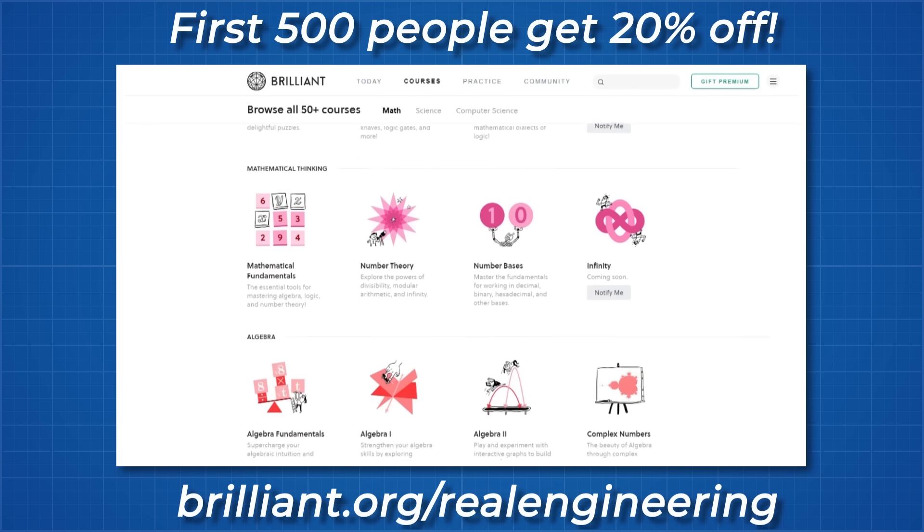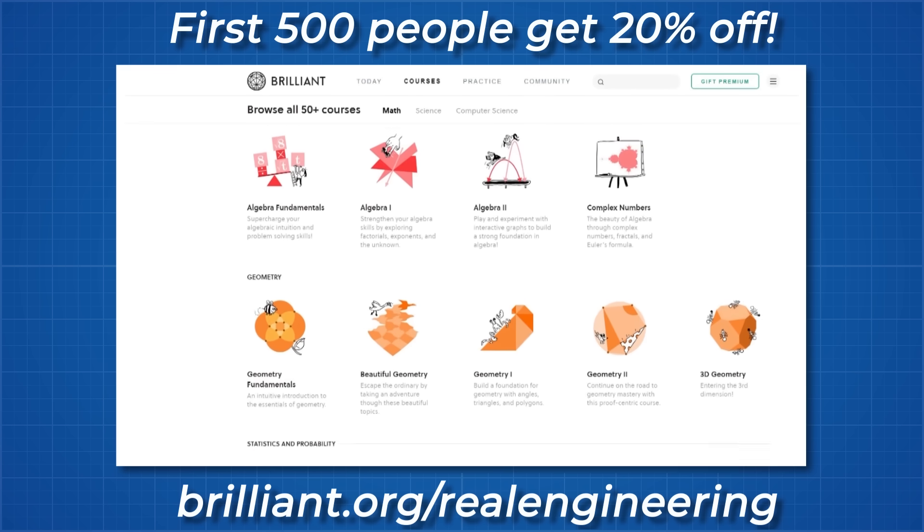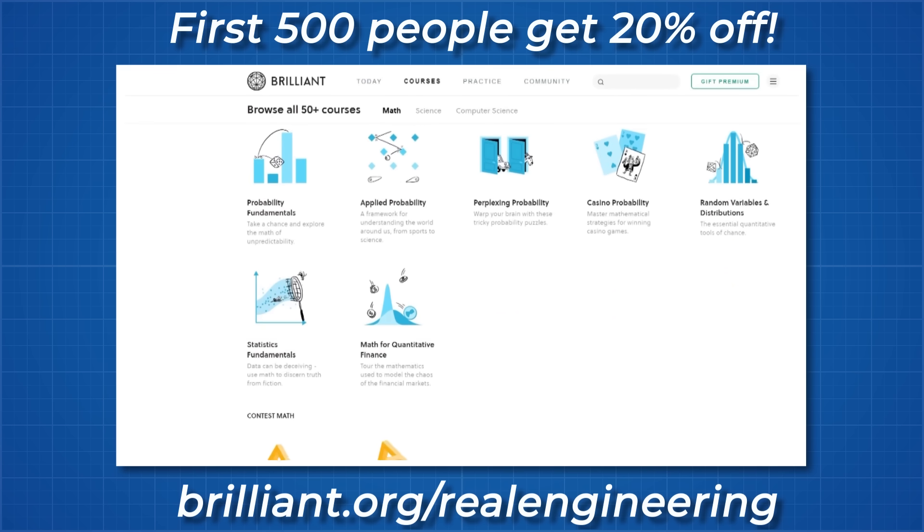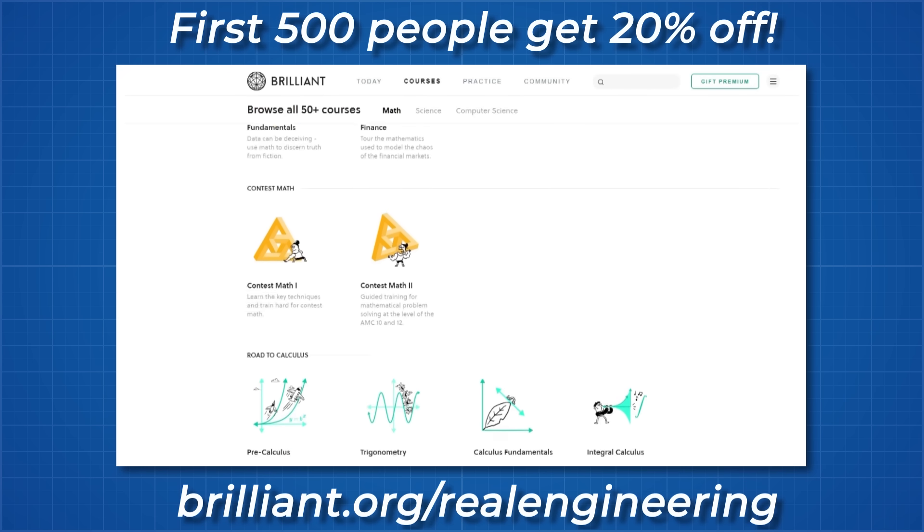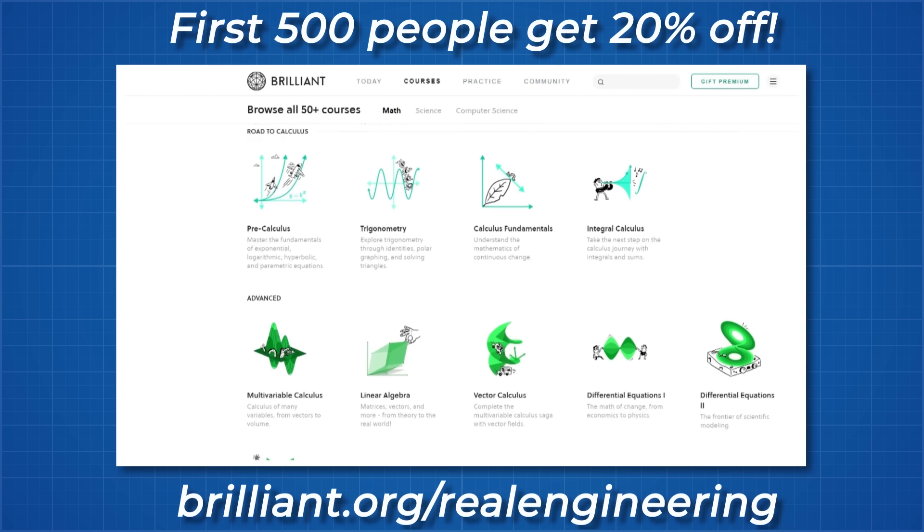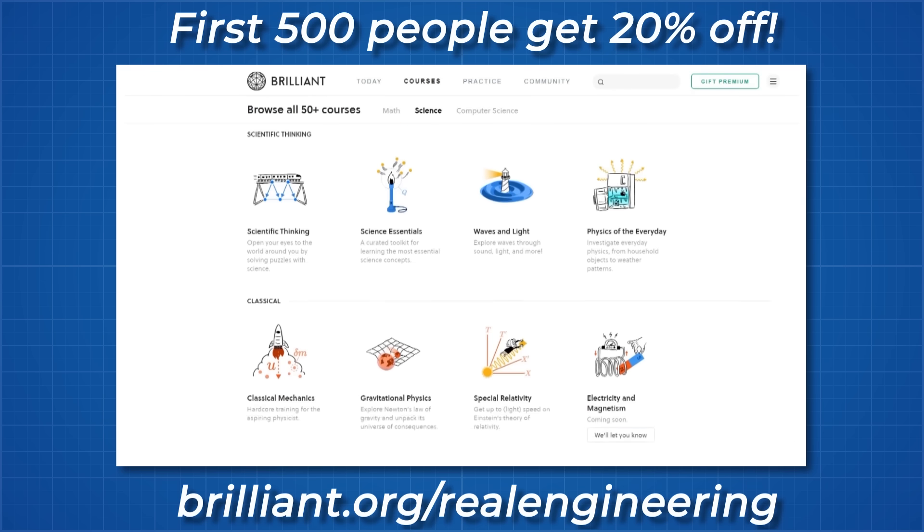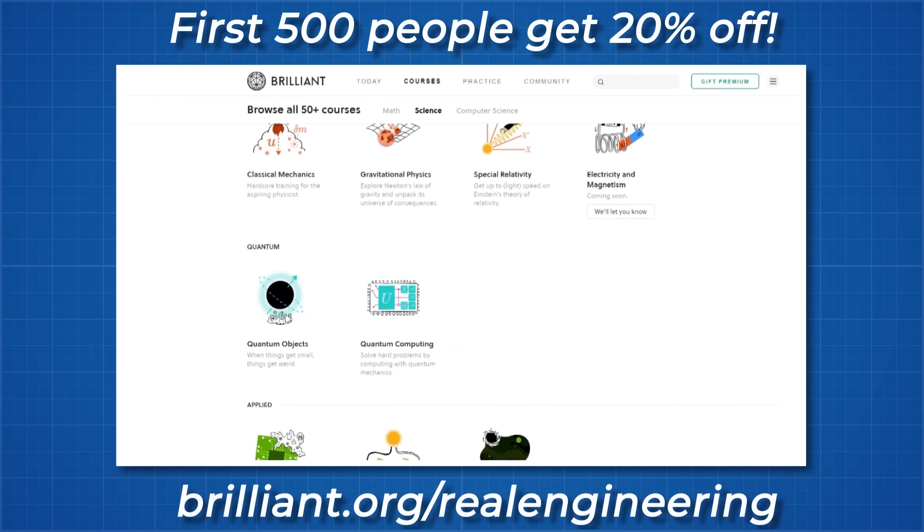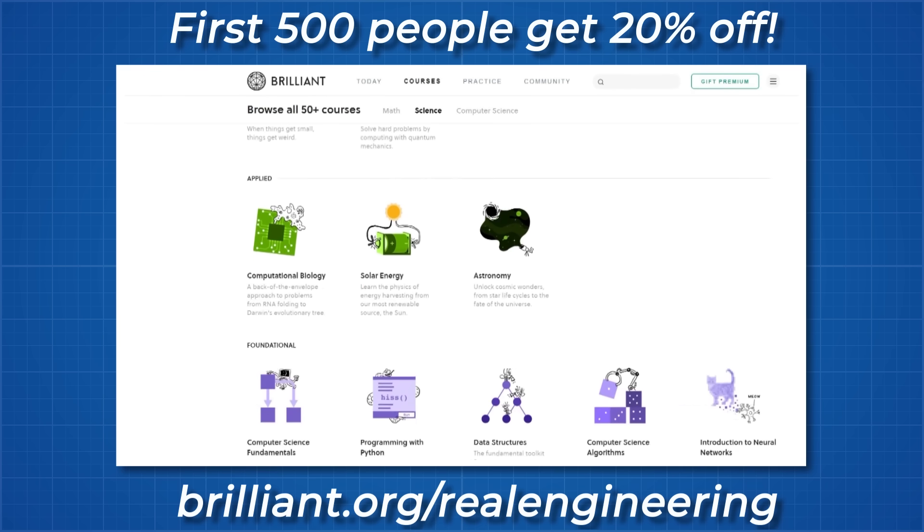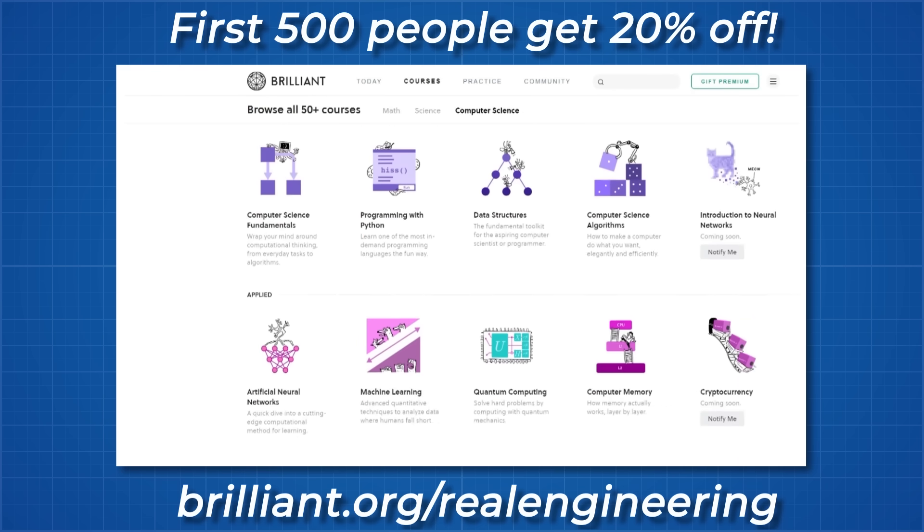If I have inspired you and you want to educate yourself, then go to brilliant.org forward slash real engineering and sign up for free and the first 500 people that go to that link will get 20% off the annual premium subscription, so you can get full access to all their courses as well as the entire daily challenges archive.